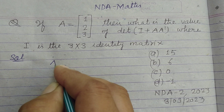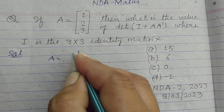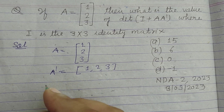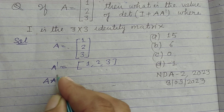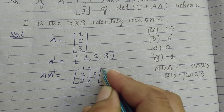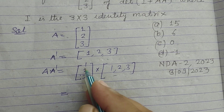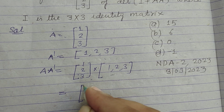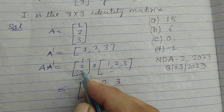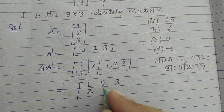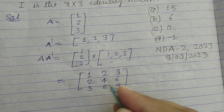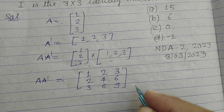So student, here A is given to us as [1, 2, 3]ᵀ. A dash (transpose) will be [1, 2, 3]. Now A into A dash is the product of the column vector [1,2,3]ᵀ with row vector [1,2,3], giving the 3×3 matrix: first row 1, 2, 3; second row 2, 4, 6; third row 3, 6, 9. So we got AA dash as a 3 by 3 matrix.